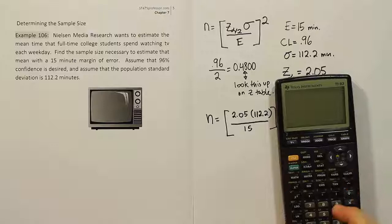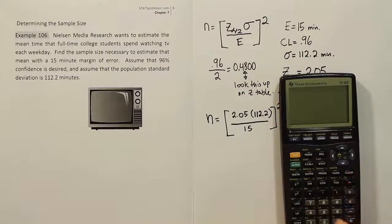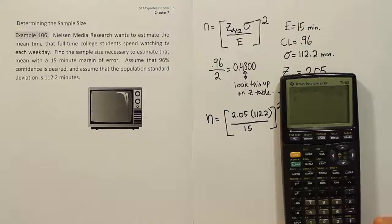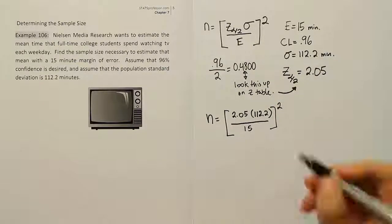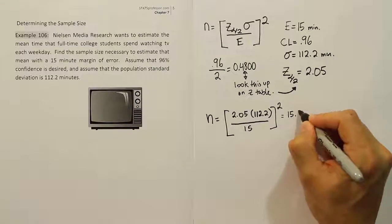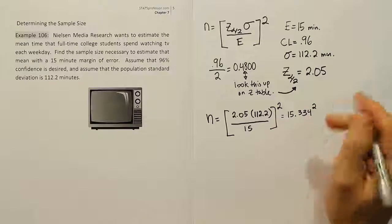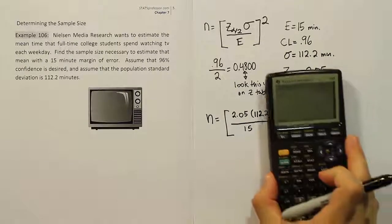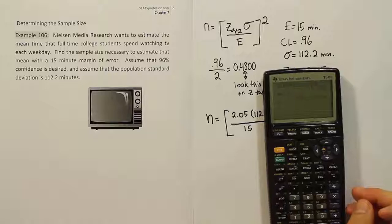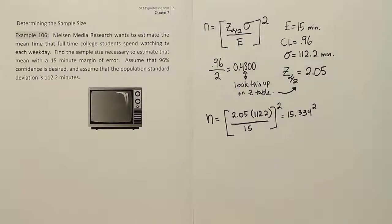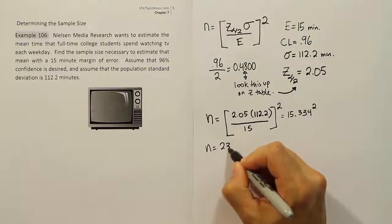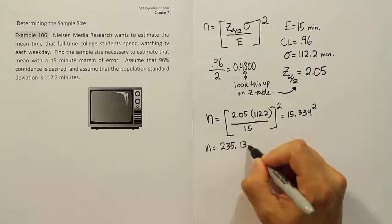Let's use the calculator. We have 2.05 times 112.2 divided by 15, which gives 15.334. But we still need to square that. When we square 15.334, we get 235.13... So n = 235.13...